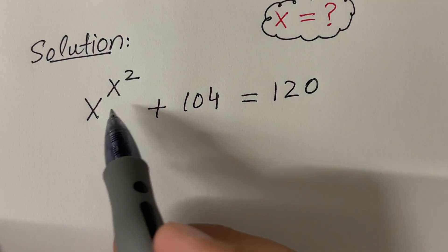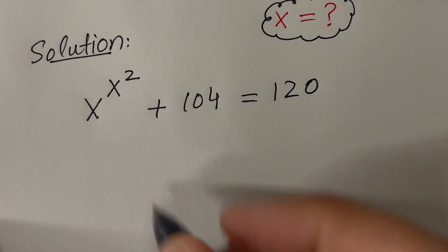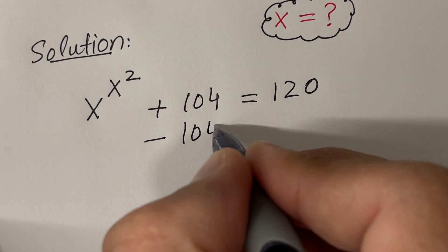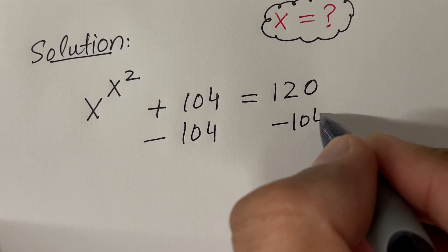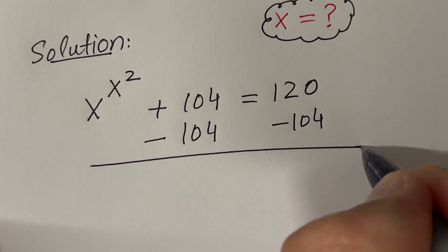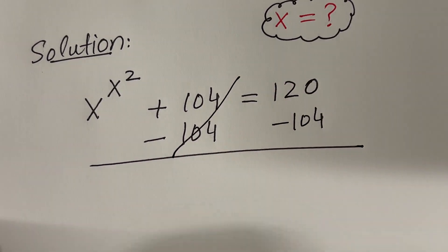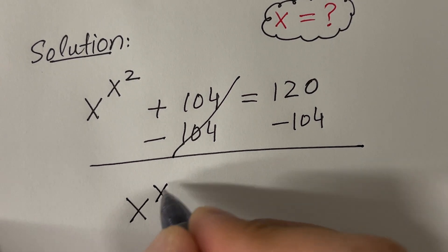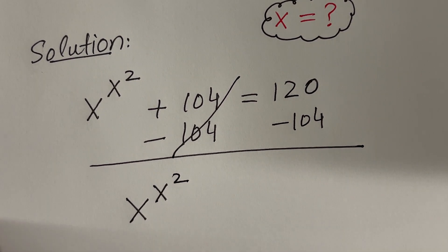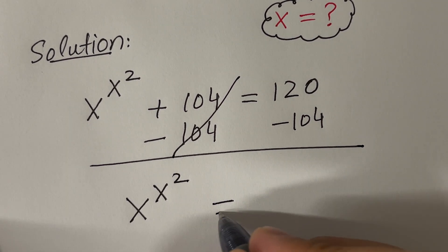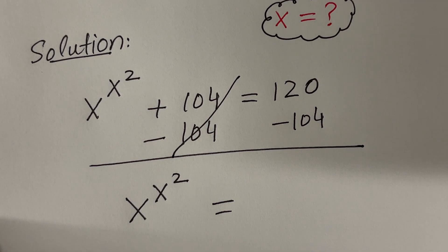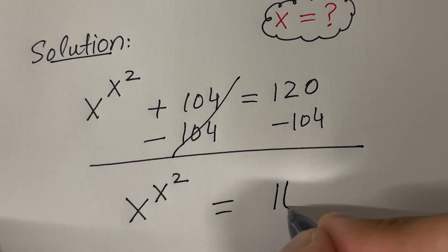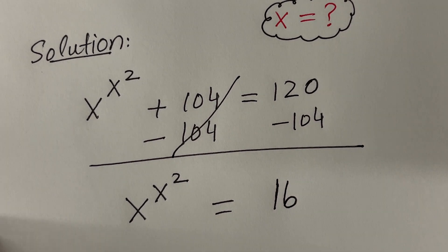Now we want to find x. Let's isolate x — in other words, let's subtract 104 from both sides. These will cancel and we will have x raised to the power x raised to the power 2, and on the right hand side 120 minus 104 is equal to 16.